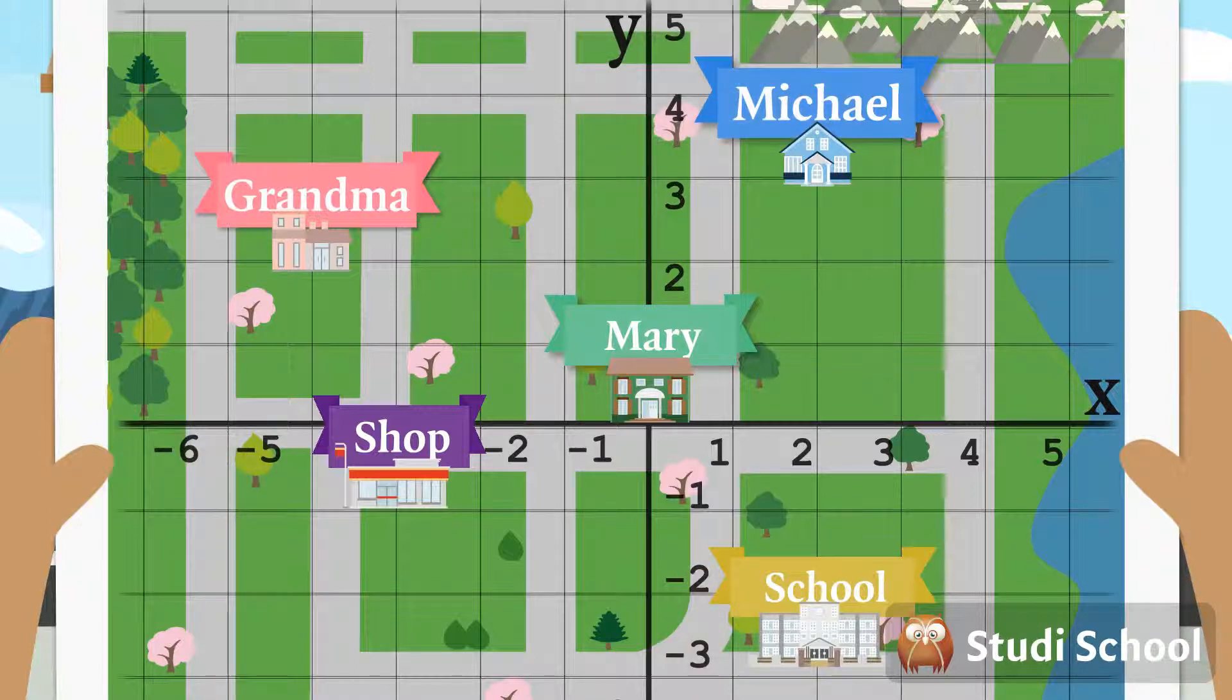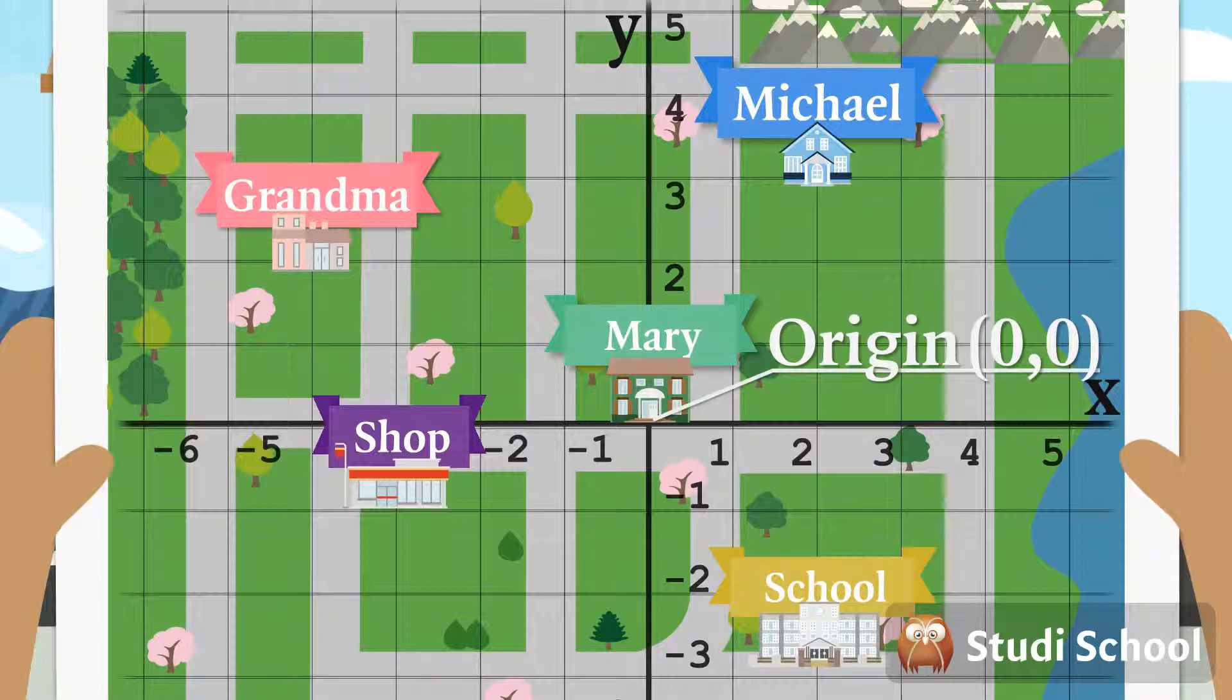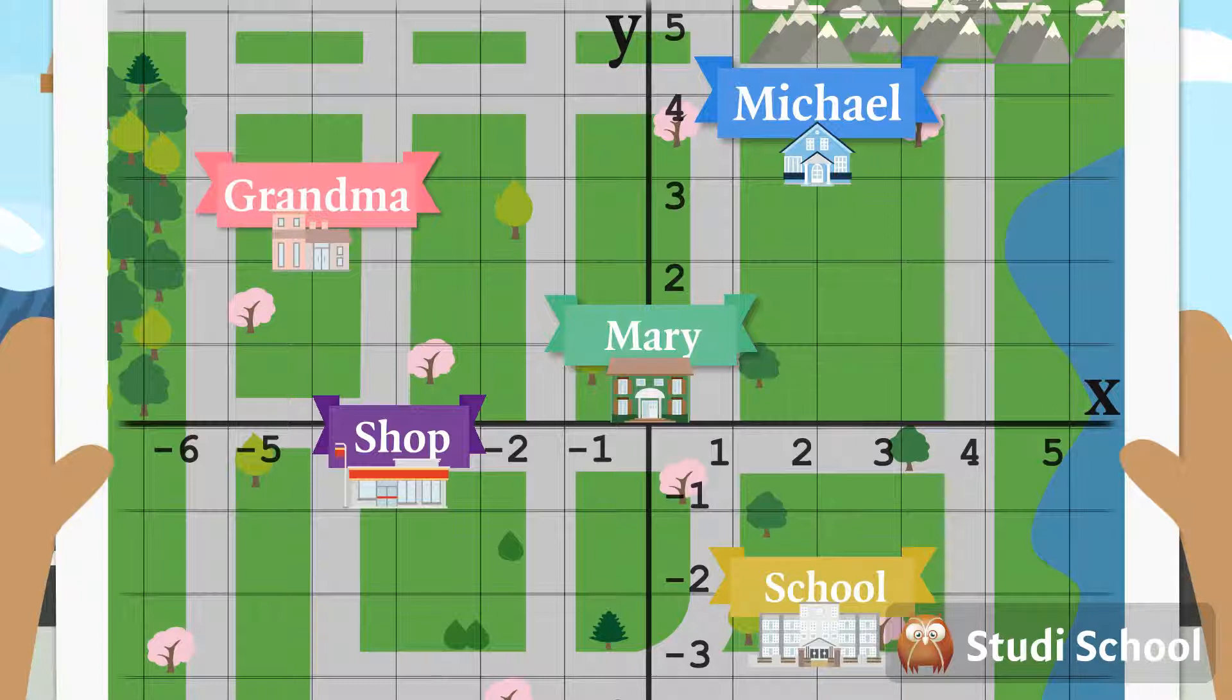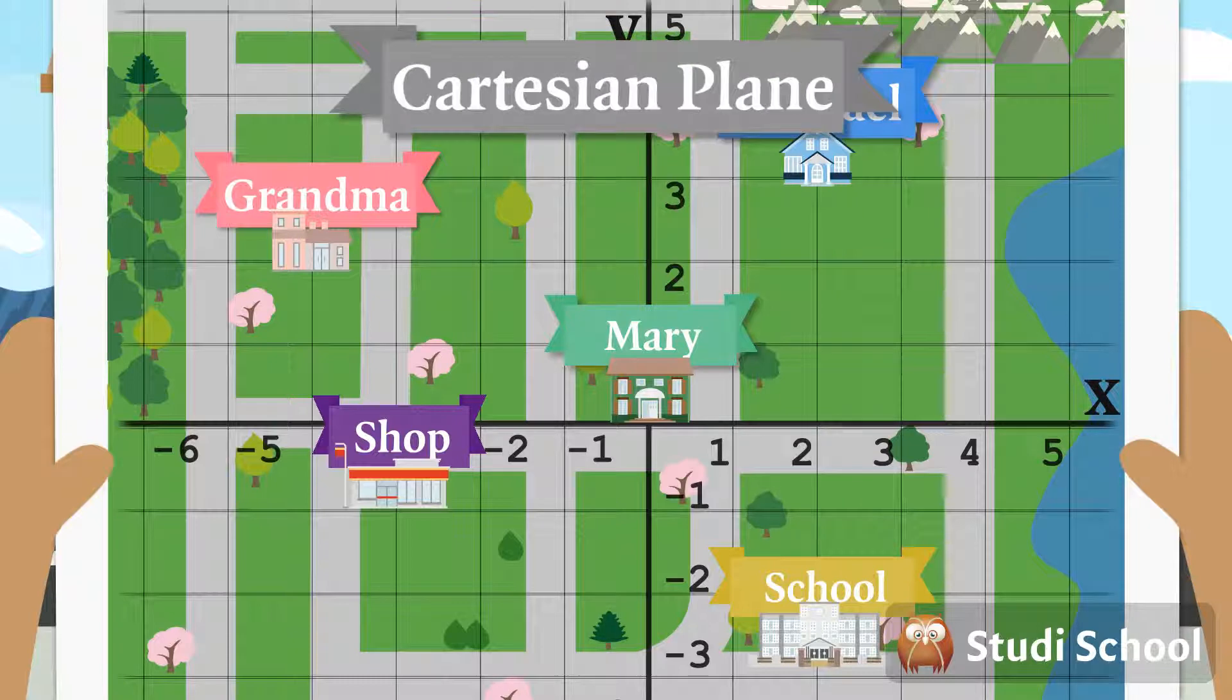The point where both X and Y is zero is called the origin, which is where Mary's house is located. A mathematician by the name of Cartesius introduced this system, so we sometimes call it a Cartesian plane.